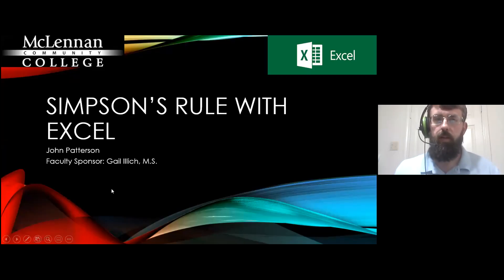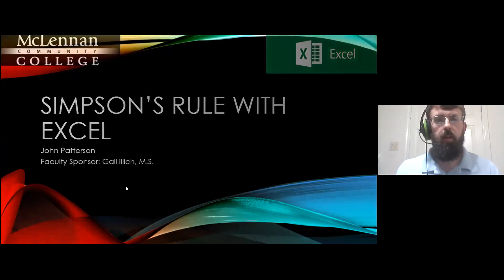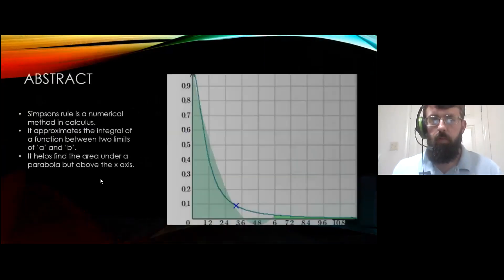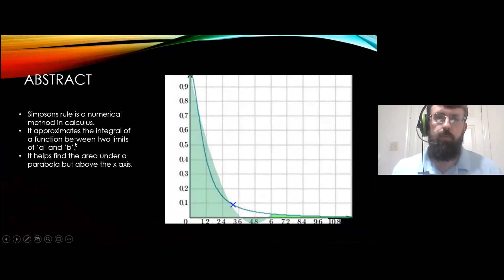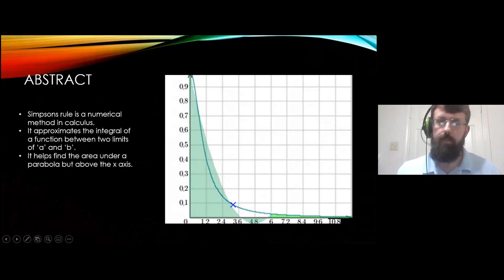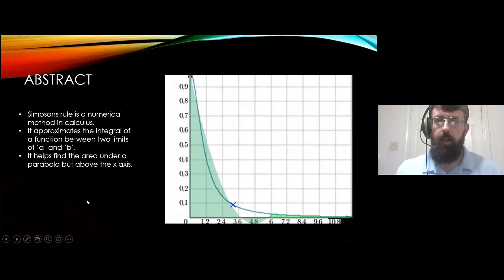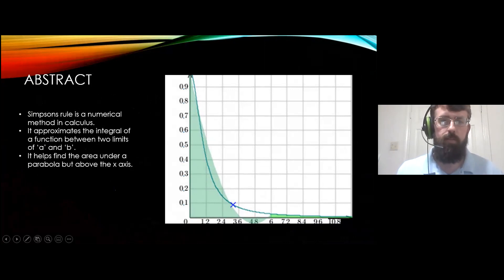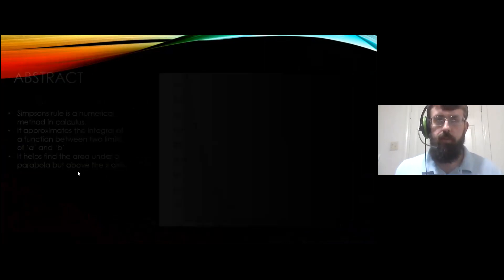Hello, my name is Shawn Patterson, and I'll be showing you how to do the Simpson's rule with Excel. The Simpson's rule is basically a numerical method in calculus. It approximates the integral of a function between two limits of A and B, and it helps find the area under a parabola but above the x-axis — so the area between the parabola and the x-axis is what you're looking for.